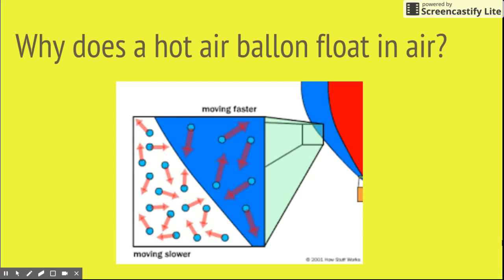A cubic foot of air weighs roughly 28 grams, about an ounce. If you heat that air by 100 degrees Fahrenheit, it weighs about 7 grams less. Therefore, each cubic foot of air contained in a hot air balloon can lift about 7 grams. Now that's not much, and this is why a hot air balloon needs to be so huge. In order to lift 1,000 pounds, you need about 65,000 cubic feet of hot air.